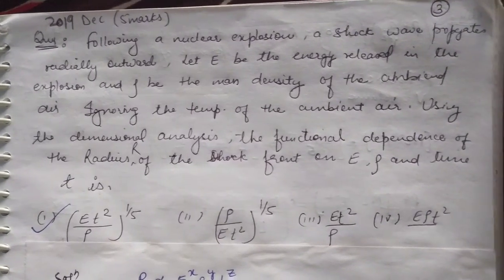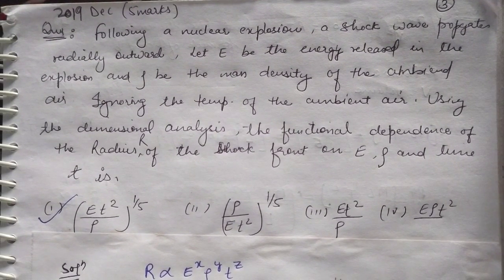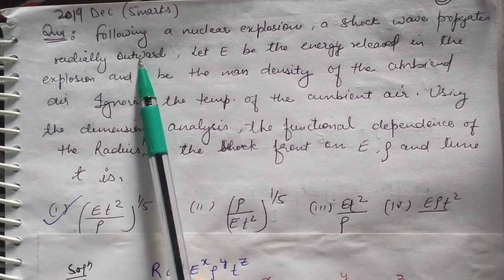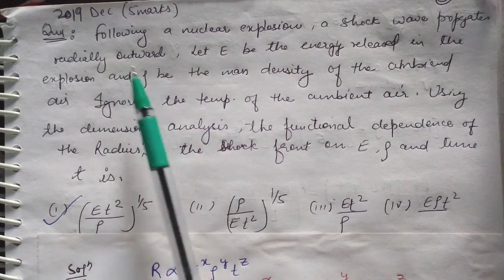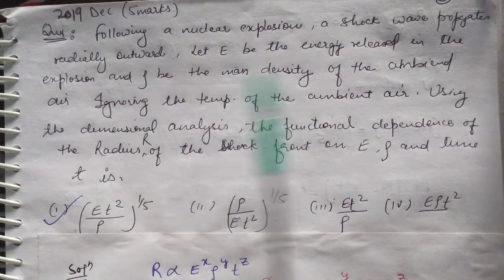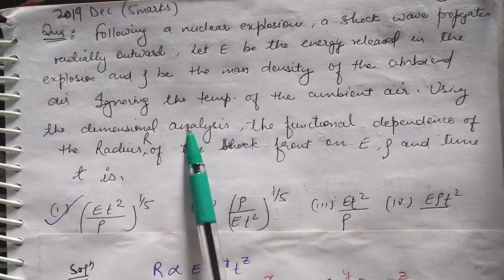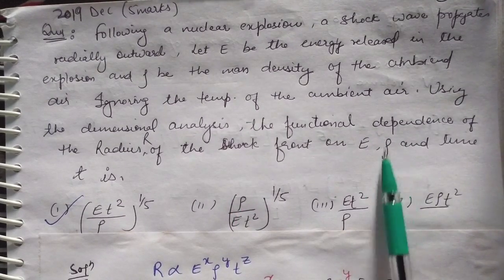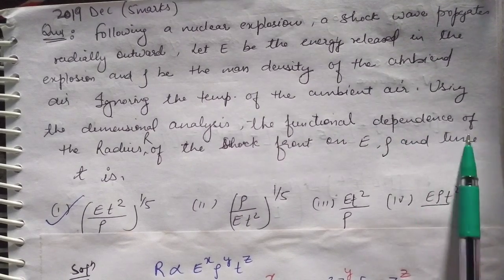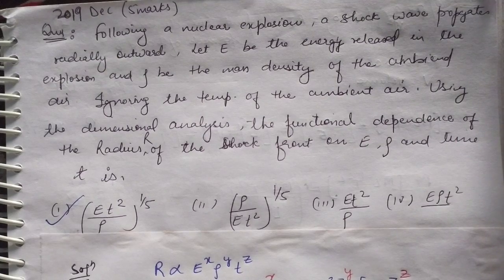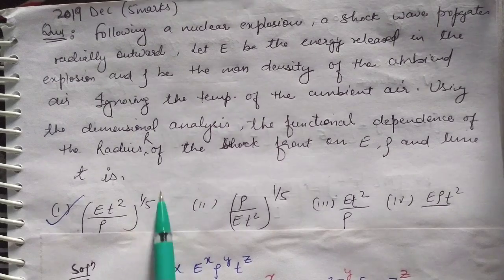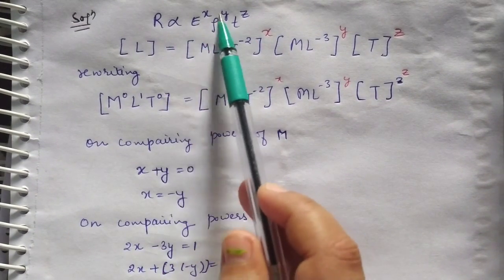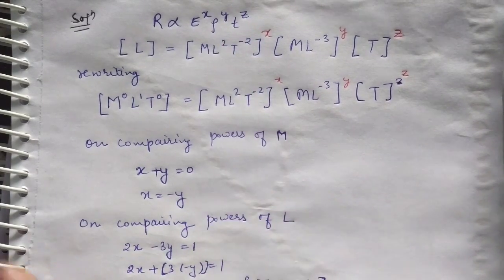Now the most important question, which was asked for five marks in the December 2019 CSIR NET exam. Following a nuclear explosion, a shock wave propagates radially outward. Let E be the energy released, ρ be the mass density of the ambient air. Ignoring the temperature of the ambient air, using dimensional analysis find the functional dependence of the radius of the shock front on E, ρ, and time t.